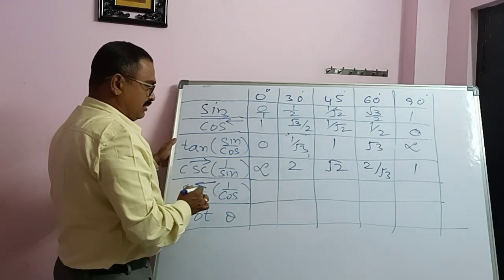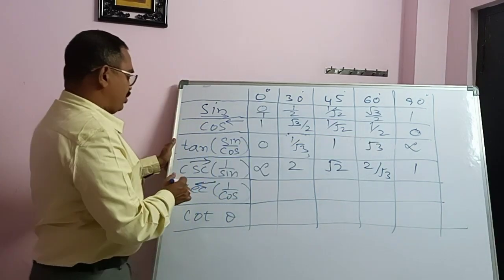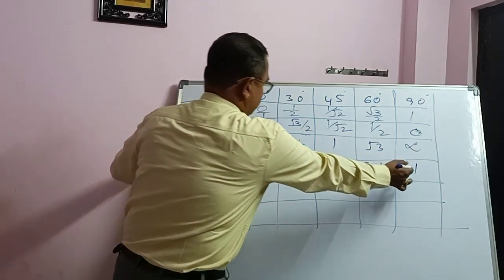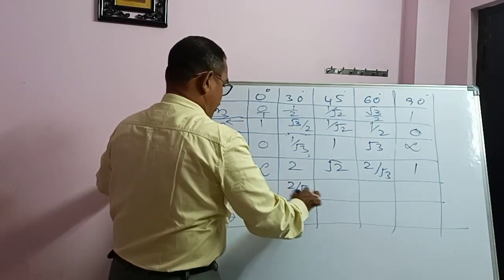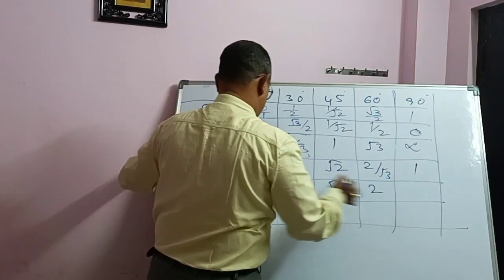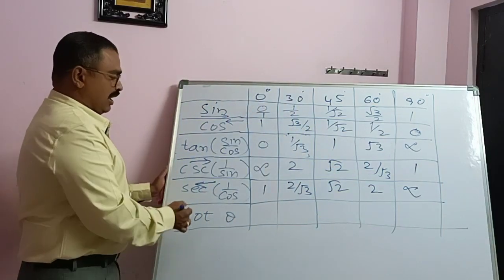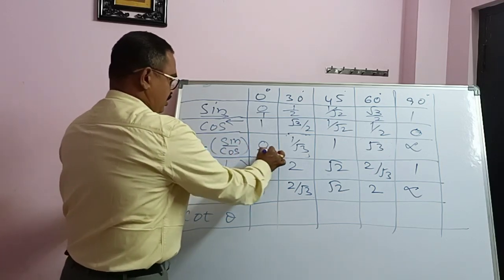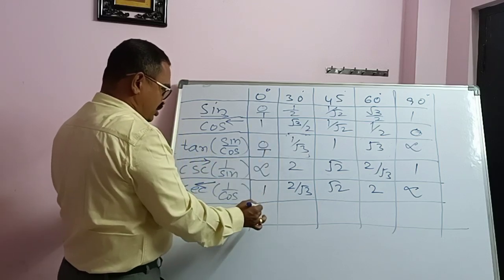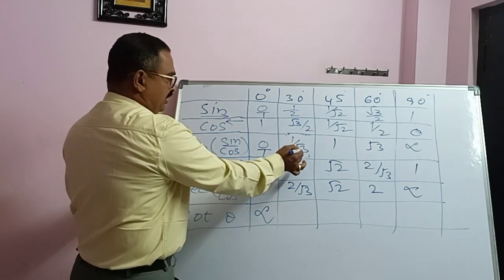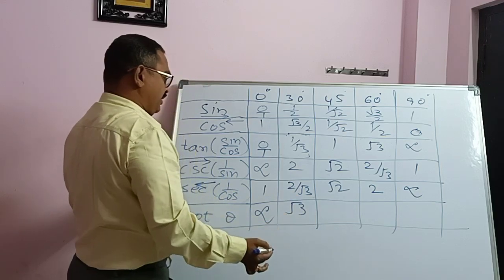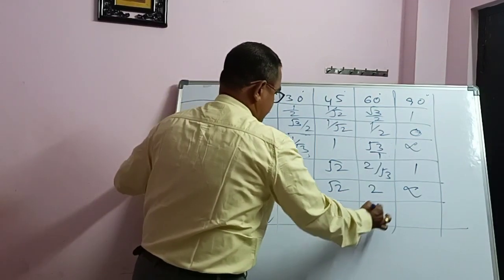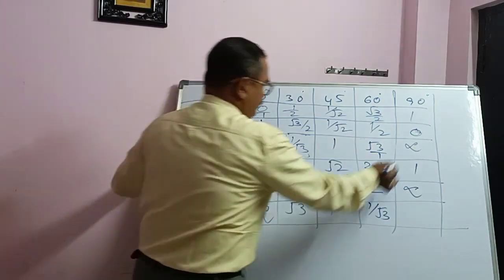Cosecant theta values are here. Just put a reverse arrow mark and reverse the values from right to left — we can get secant theta. Secant theta is the inverse of cos theta. So: 1, 2/√3, √2, 2, and infinity. Cot theta is also the reciprocal of tan theta. So: infinity, √3/1 which is √3, reciprocal of 1 is 1, reciprocal of √3 is 1/√3, and reciprocal of infinity is 0.